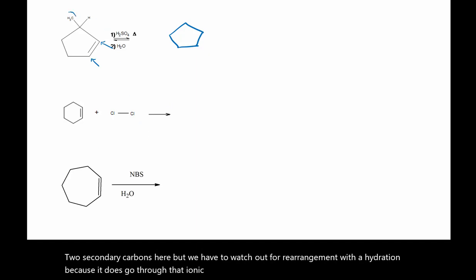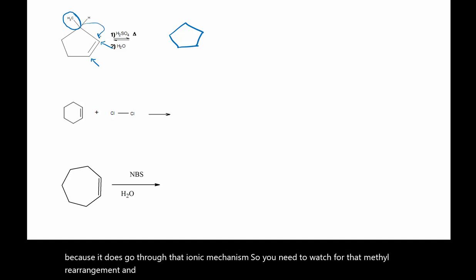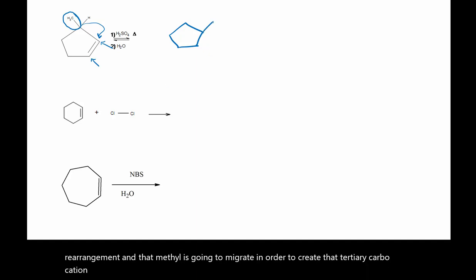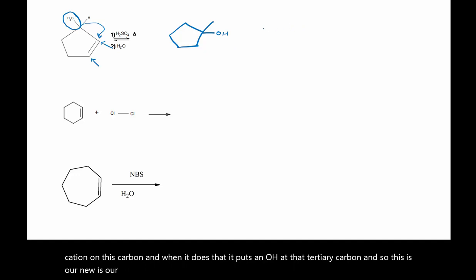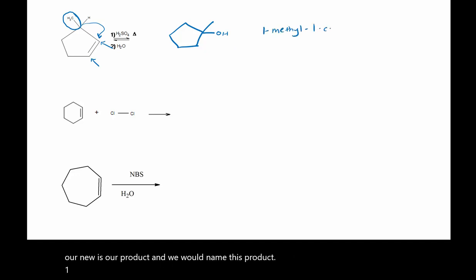So you need to watch for that methyl rearrangement. That methyl is going to migrate in order to create a tertiary carbocation on this carbon, and when it does that it puts an OH at that tertiary carbon. So this is our product, and we would name this product: 1-methyl-1-cyclopentanol.